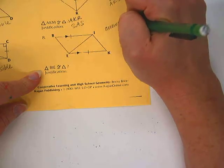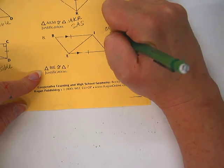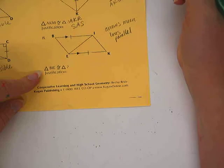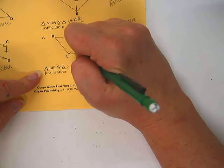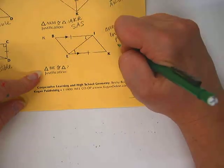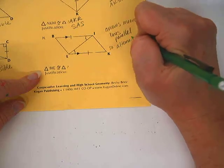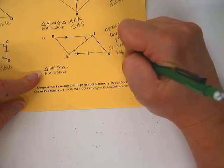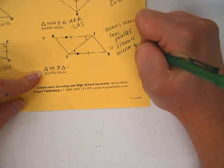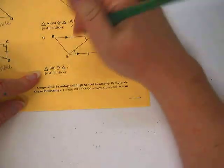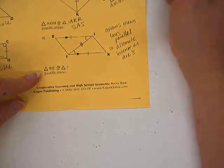This one has something tricky. The arrows mean that the lines are parallel. Arrows mean lines parallel. And when the lines are parallel, there's different types of angles that will be congruent. So in this case, we have these two angles that will be congruent. So the alternate interior angles are congruent.